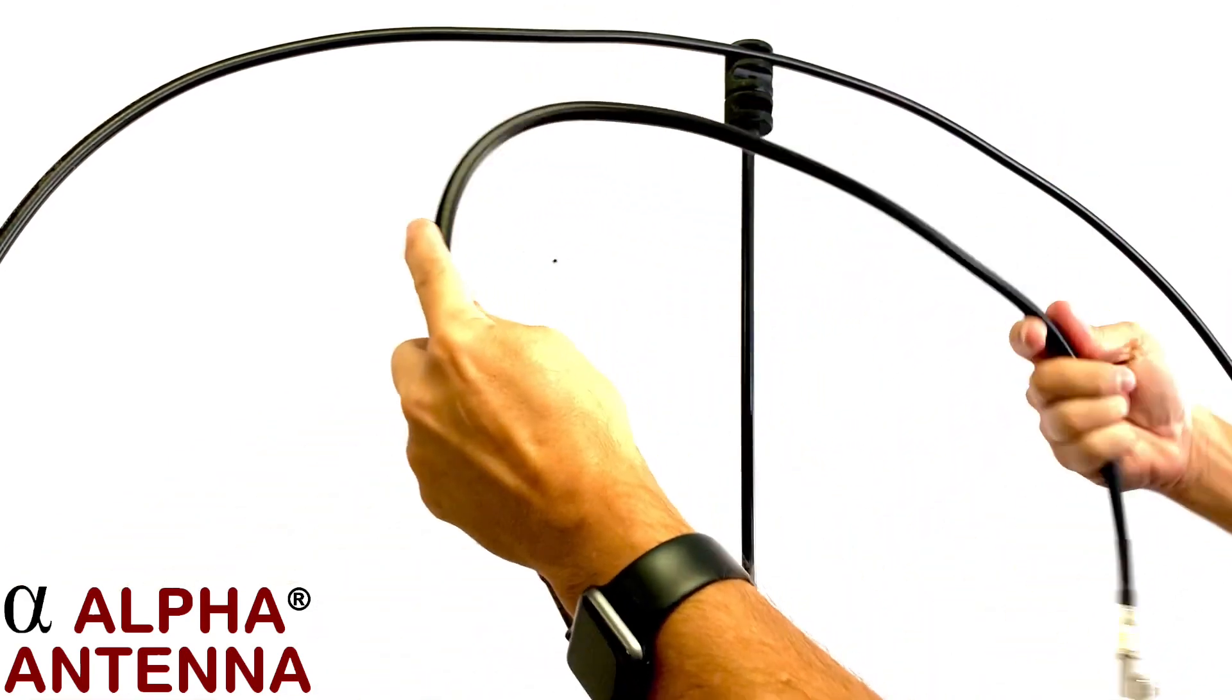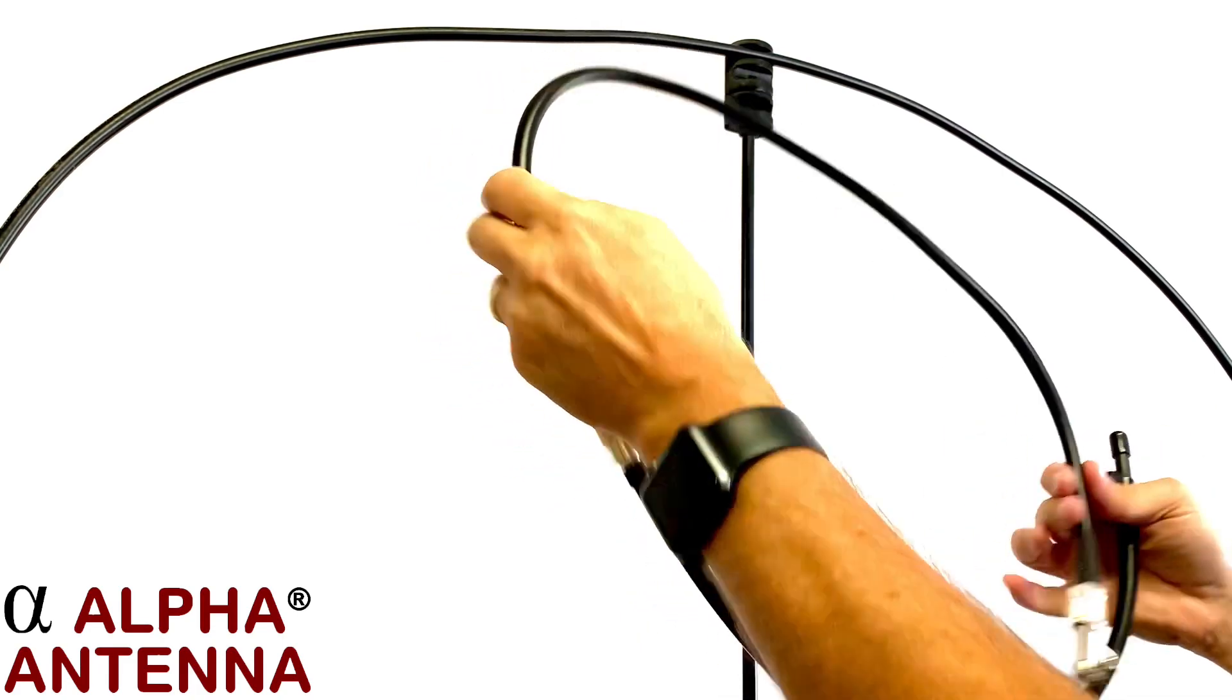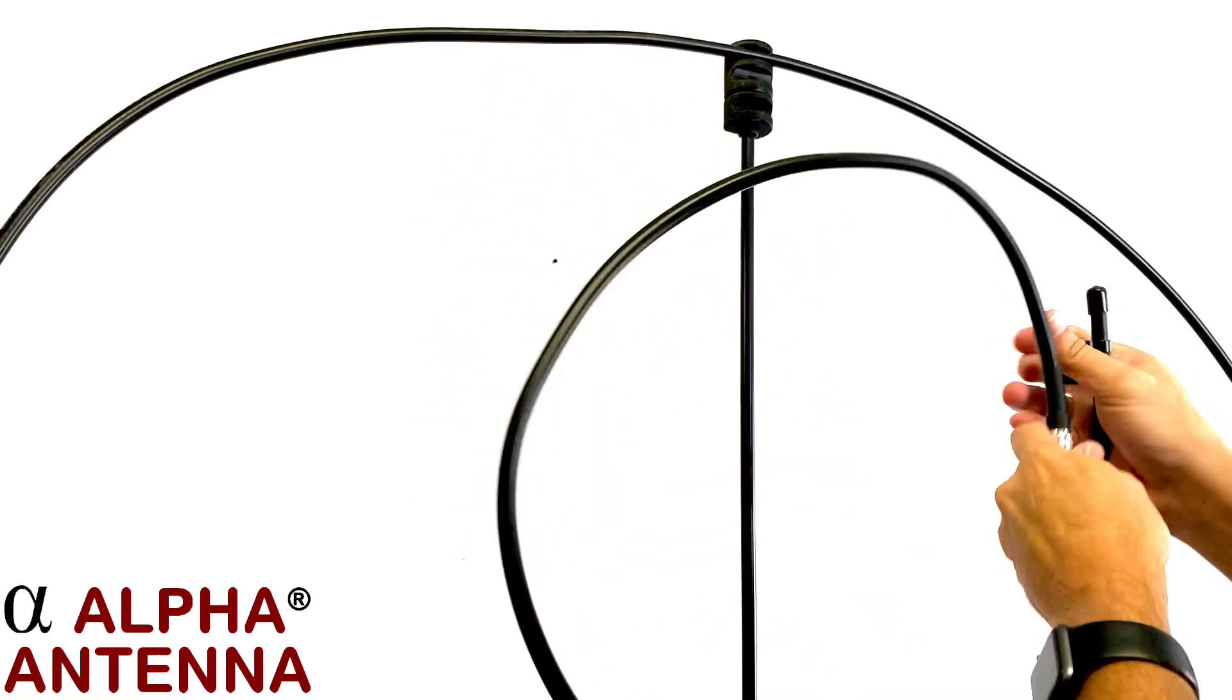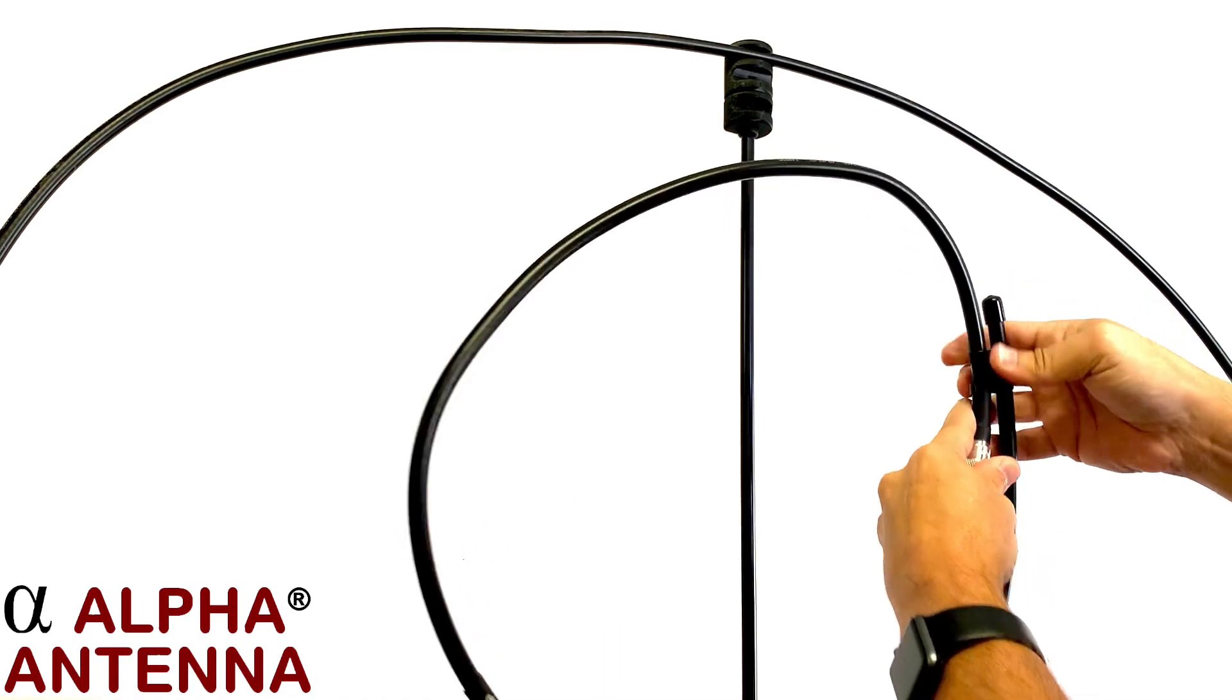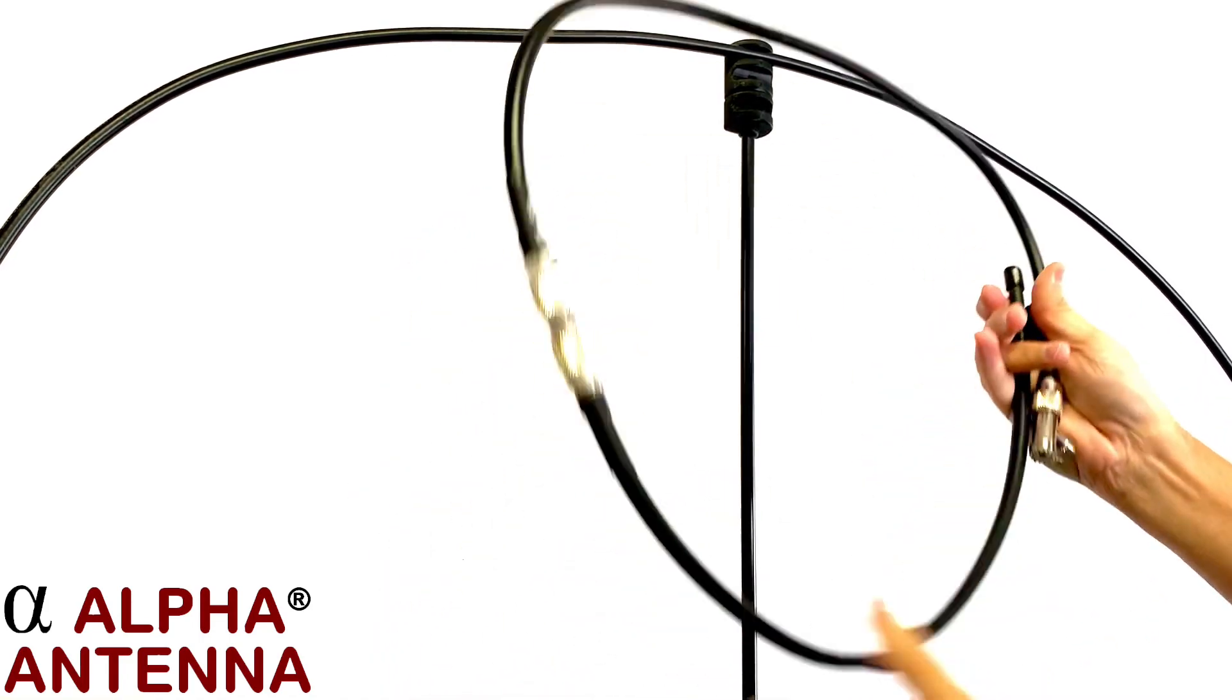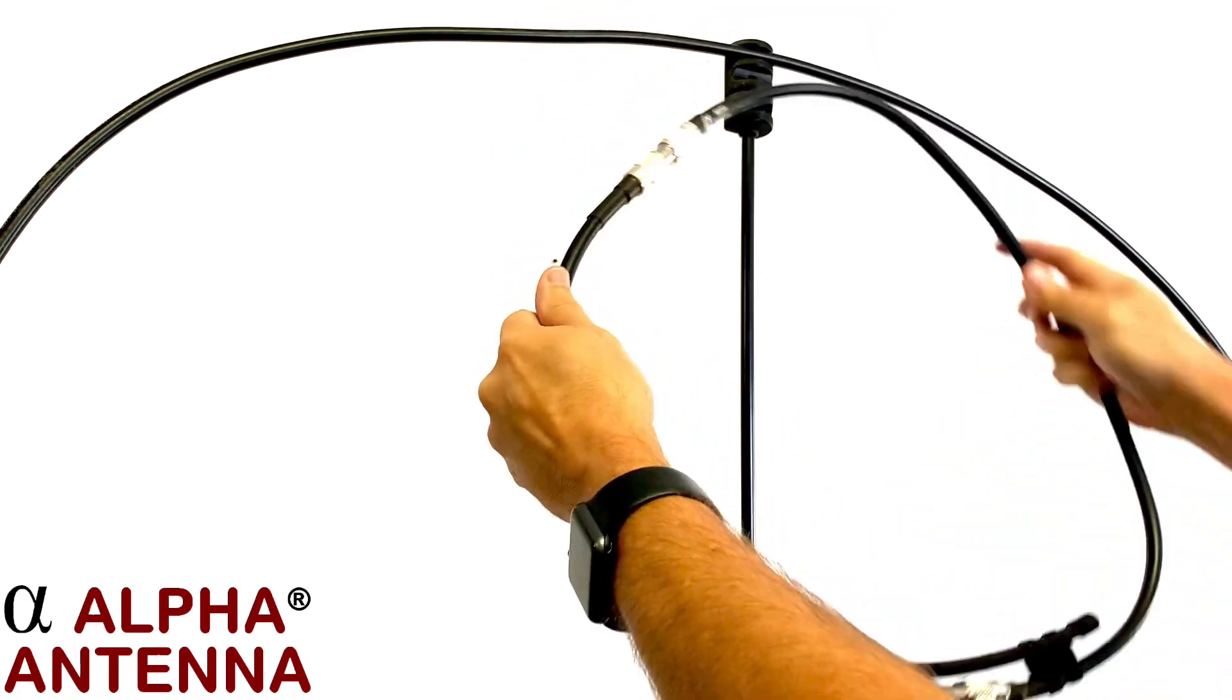Then form an approximate circle to form a single loop. Use the nylon clip on the add-on element to attach it to the opposite side of the T connector, like so.